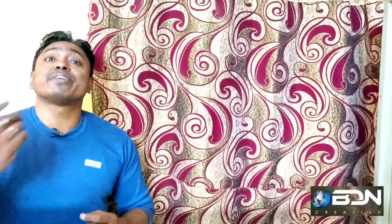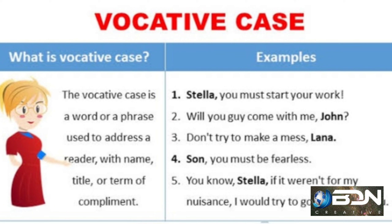Indirect Object is the recipient of the action. For example: 'He gave me a pen.' Here, 'me' is the recipient. So, 'me' will be called the Indirect Object.